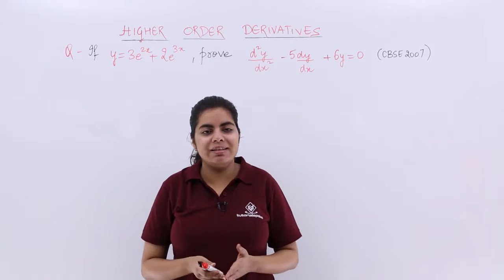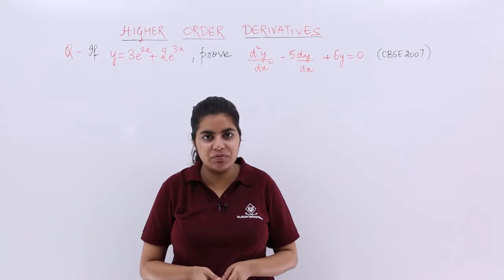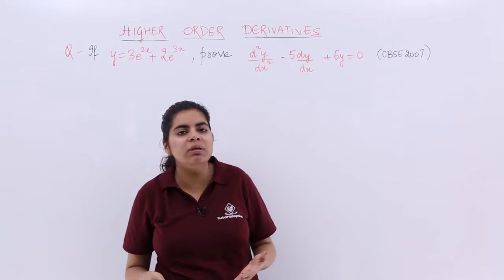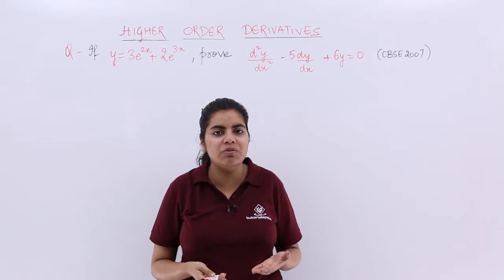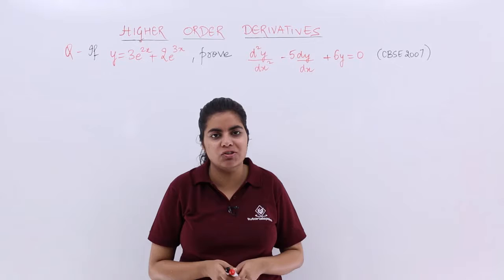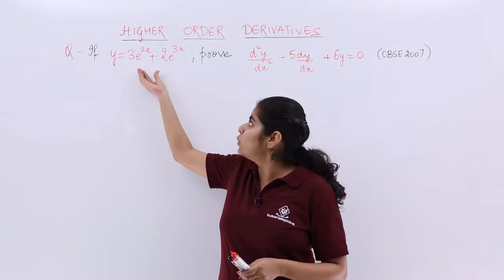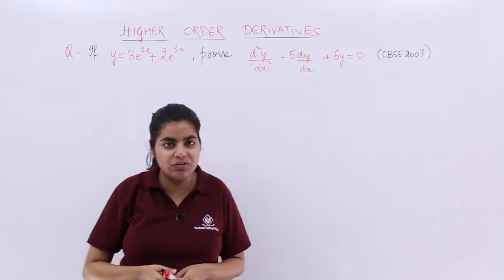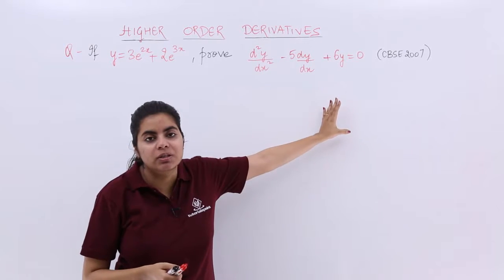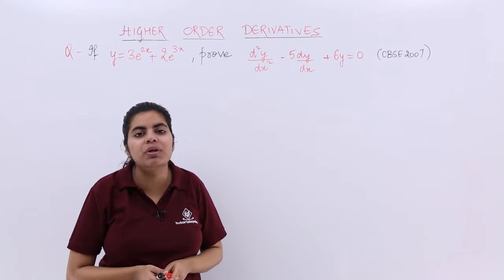In this video, let's see another numerical problem based on the concept of higher-order derivatives. The concept of higher-order derivatives has already been made very clear through the previous videos. This is the last numerical problem we are taking up. It says if y is equal to 3e raised to the power 2x plus 2e raised to the power 3x, prove something of this sort. It has been asked in the year 2007 in the CBSE board examination.